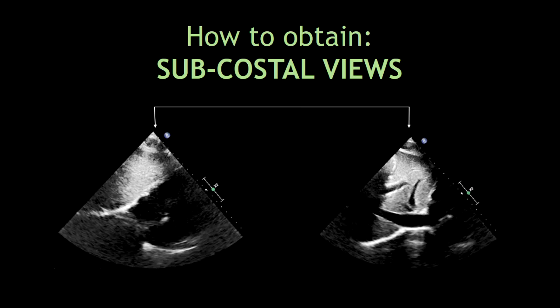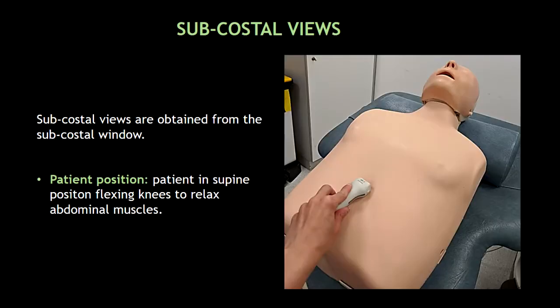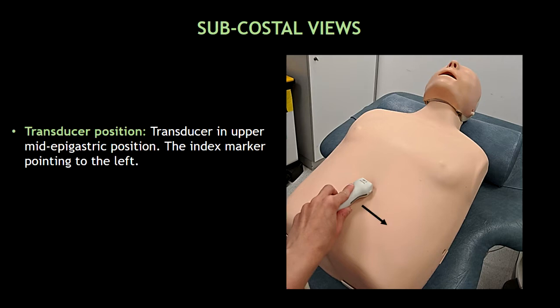Hello guys, in this video I'm going to show you how to obtain the subcostal views. Subcostal views are obtained from the subcostal window. The patient has to be in supine position, flexing knees to relax the abdominal muscles. Place the transducer in upper mid-epigastric position. The index marker has to be pointing to the left.